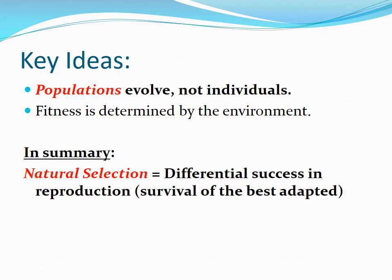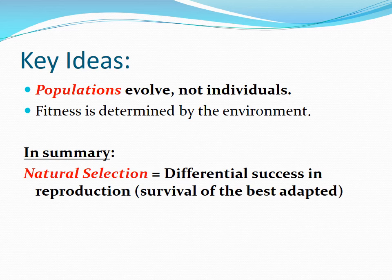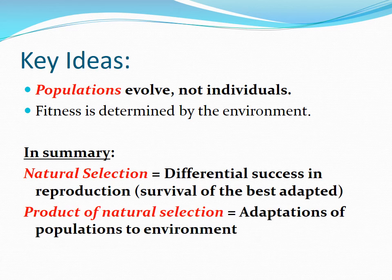Natural selection is the idea of differential success in reproduction. It is not survival of the strongest — it is survival of the best adapted. If you are better adapted to your environment, you will have more children and those traits will become more prevalent. The actual product of natural selection is the adaptation of populations to their environments, which we'll see in many examples.